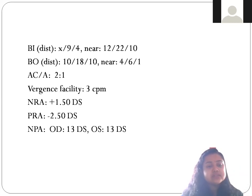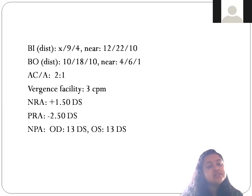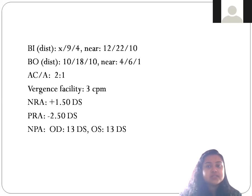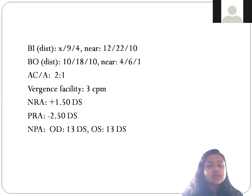When we check the vergence facility with the vergence flipper — which has 3 prism base-in and 12 prism base-out — the patient can complete only 3 cycles per minute. Checking NRA (negative relative accommodation), it is coming to plus 1.5 diopters. The PRA is minus 2.5 diopters — quite normal. But the NRA is very, very low; normal NRA should be around plus 2.5 diopters.